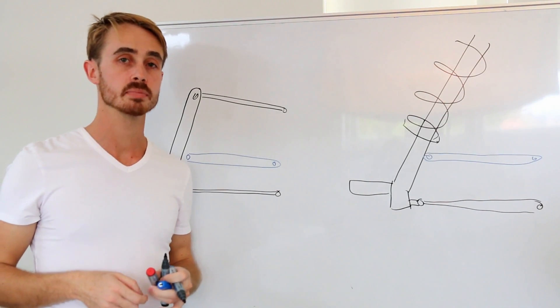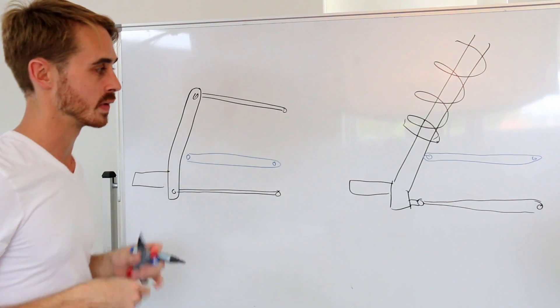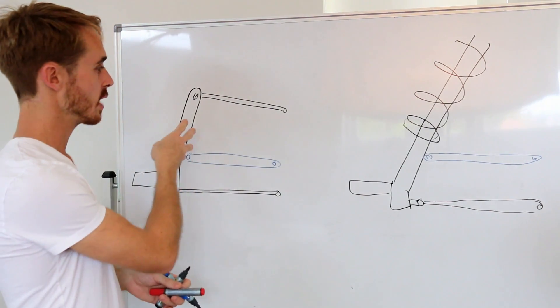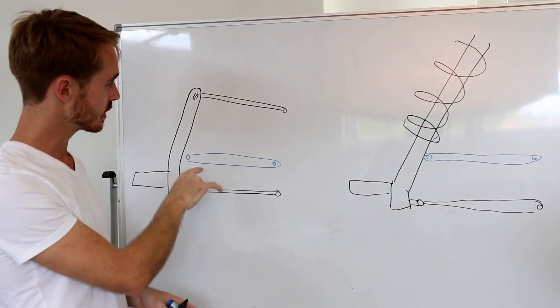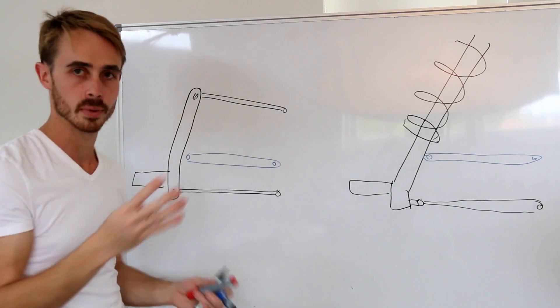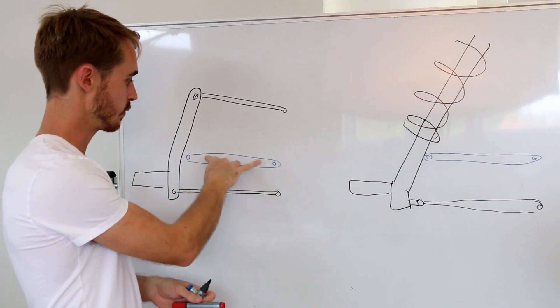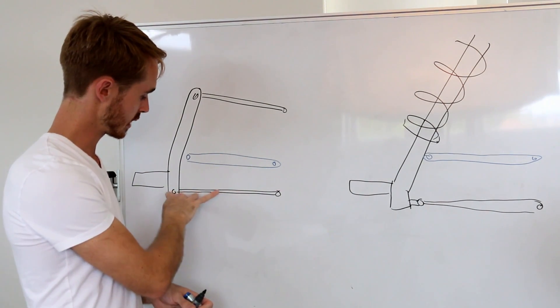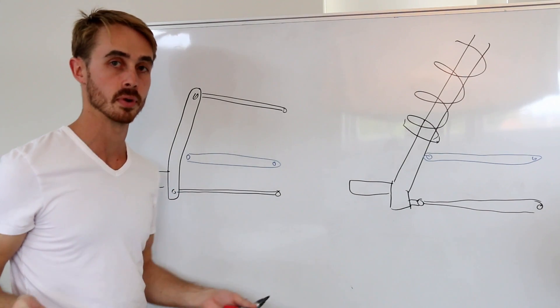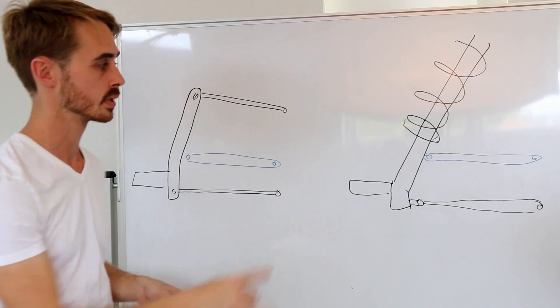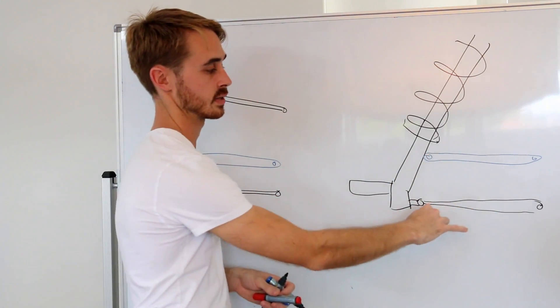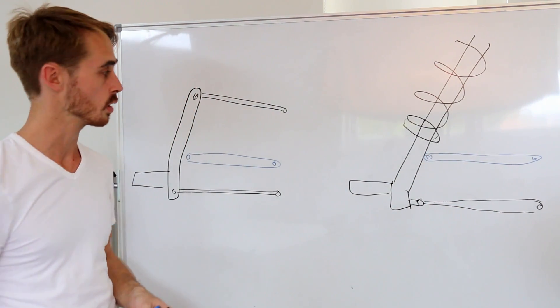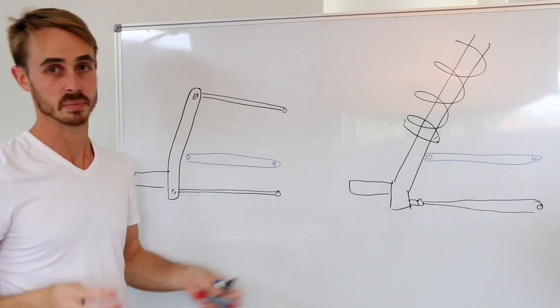So how do we minimize bump steer? Well, on the face value of it, it's a pretty simple problem. If we have a look at my crudely drawn McPherson strut on this side and my A-arm on this side, we can see that we've got two sort of common points that we can work with. If we move this tie rod down so that its points were exactly in line with the bottom A-arm, bump steer solved. Same thing with the McPherson strut. If we move that down to the bottom, bump steer solved. Or if we move this up to the top, bump steer solved.